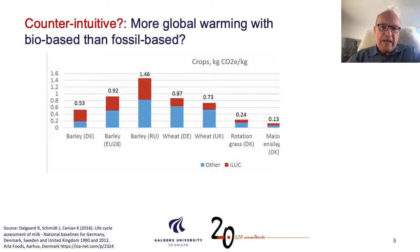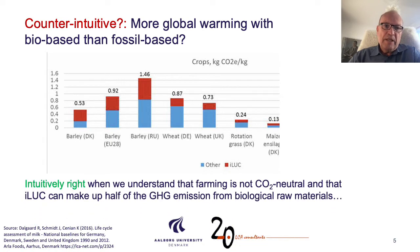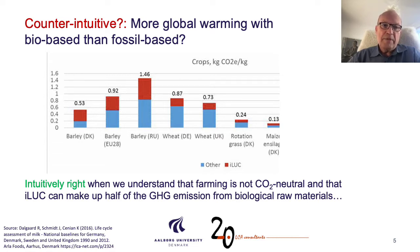And for that reason, when you compare to the fossil fuel-based parallel, if you say that we want to use a fossil fuel-based raw material instead of bio-based, you actually find often that this is not such a bad idea. So the conclusion that there is more global warming with bio-based than fossil-based raw materials in industry becomes intuitive when we understand that farming is not CO2 neutral and that ILUC can make up more than half of the global greenhouse gas emissions from biological raw materials.